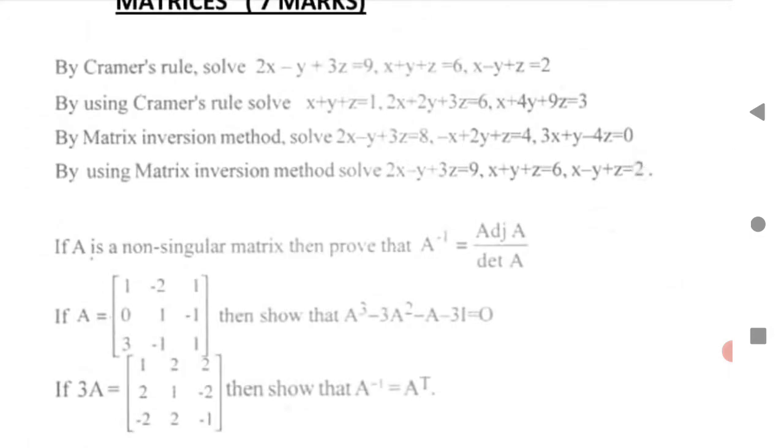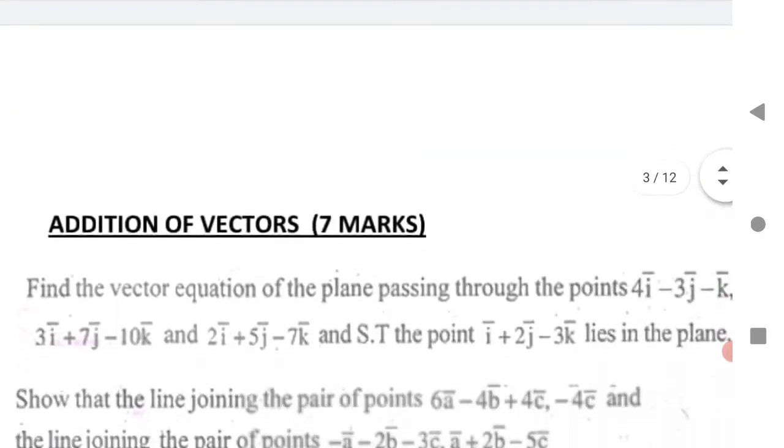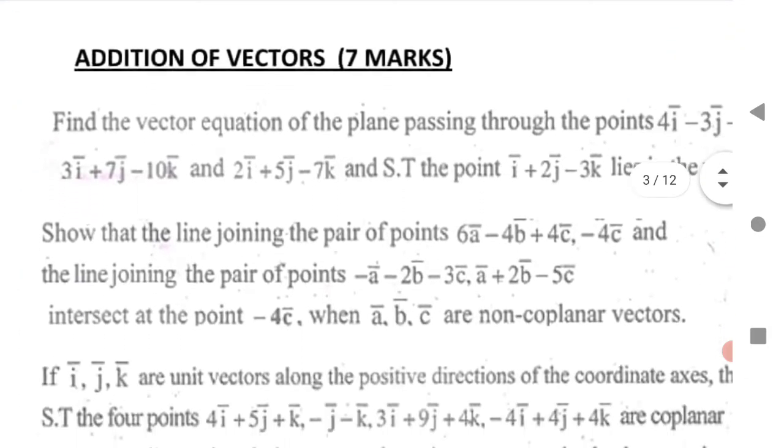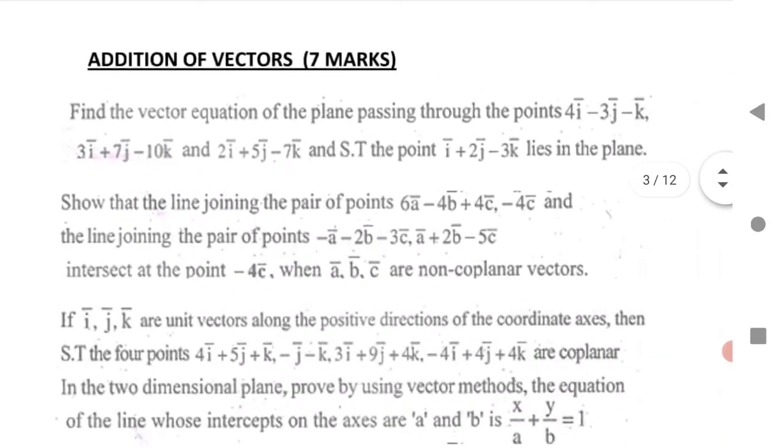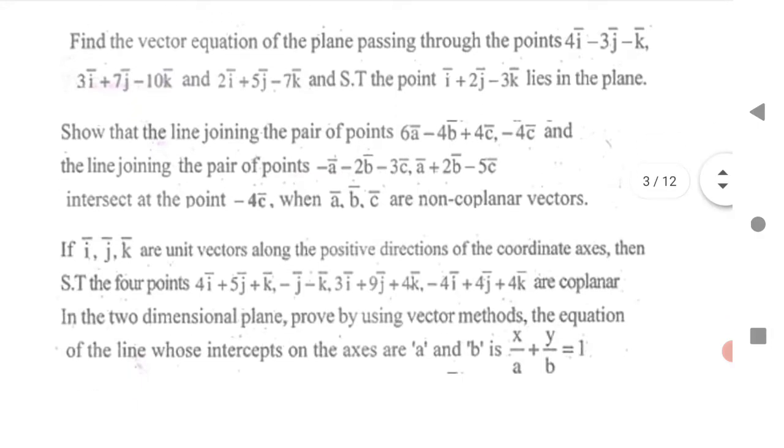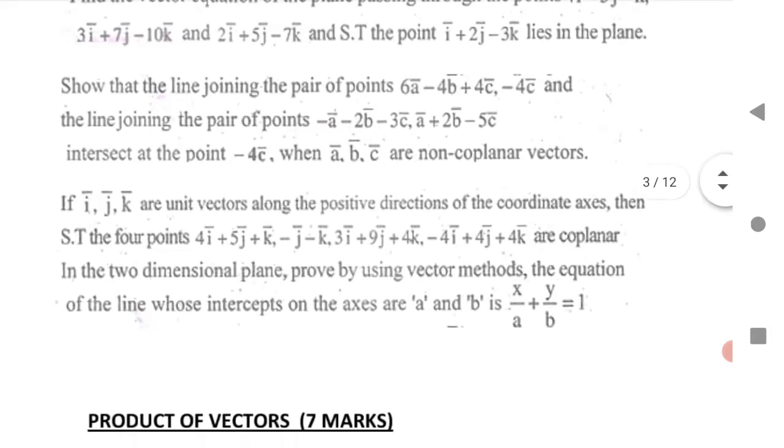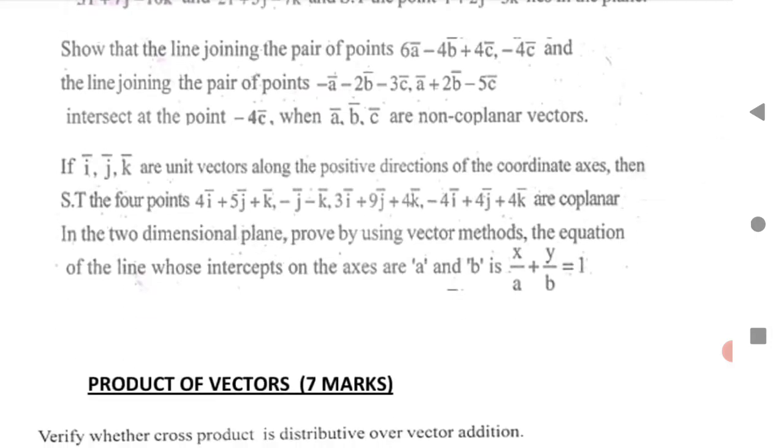Next is Addition of Vectors, 7 marks, very important chapter. First question: find the equation of a vector. Second: show that the line joining pair of points intersects at a certain point. Third: if i, j, k are unit vectors along coordinate axes, show that four given points are coplanar. Fourth: in two-dimensional plane, prove by vector method the equation of line with intercepts on axes a and b: x/a + y/b = 1.